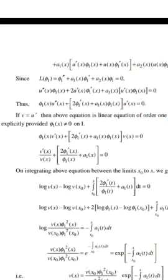If we let v = u', then the above equation is a linear equation of order one and can always be solved explicitly, provided φ₁(x) ≠ 0 on I. The equation becomes: φ₁(x)v'(x) + [2φ₁'(x) + a₁(x)φ₁(x)]v(x) = 0.